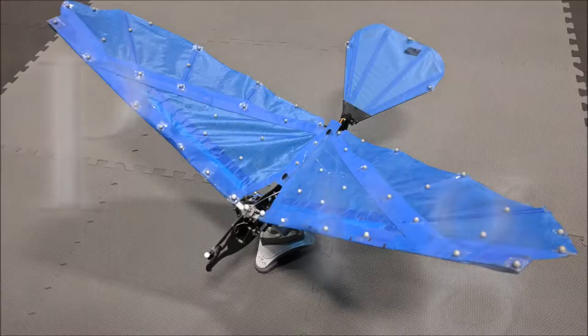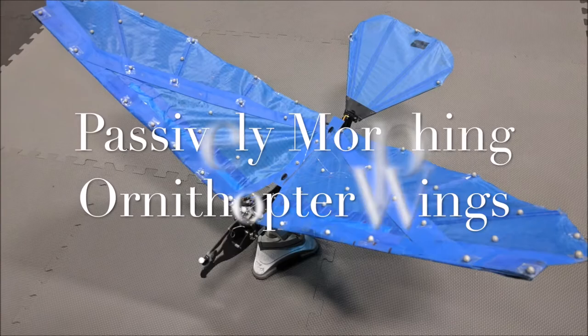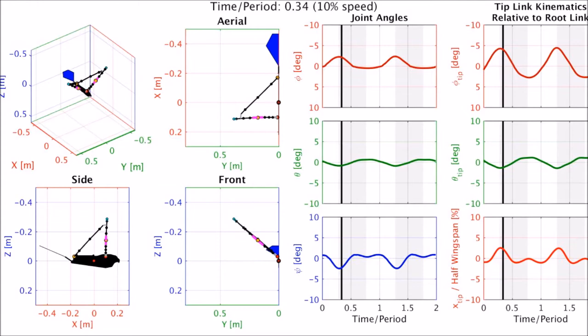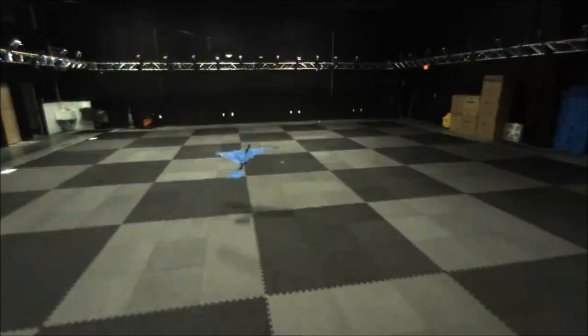So another project that we're working on has to do with passively morphing ornithopters. And what that means is that I have these robotic birds and I'm modifying their link structure to make them more agile. And we're accomplishing that by using compliant mechanisms. We're applying our design optimization methods to this particular problem. One of the nice features about this approach using the compliant mechanism is we can actually achieve this shape change passively.